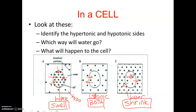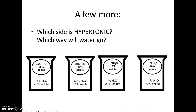It might be helpful to look at this with percentages. They've written the percentages of water and solute. You could figure it out since they have to add up to 100 — so 55% solute means the other 45% is water. But we don't even need to see the water to answer the question. The hypertonic side is the side with more solute — so that side is hypertonic, the other is hypotonic, and water would go in.